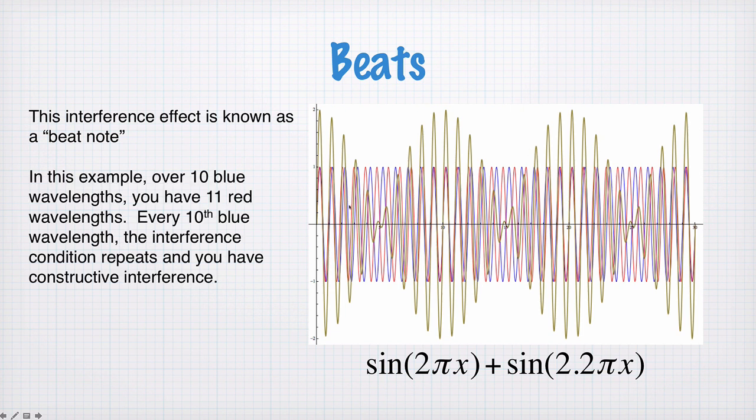In this example we have 10 blue wavelengths for every 11 red wavelengths. What that means is that every tenth blue wavelength the interference condition repeats and you'll get constructive interference. So if we counted along 10 blue wavelengths here we start off with constructive and over here we get constructive again. And in between you have destructive interference.